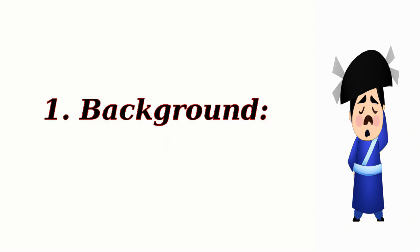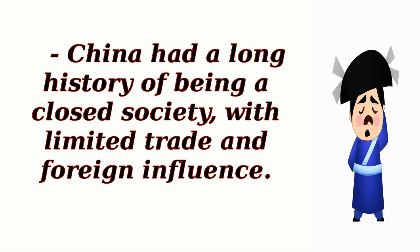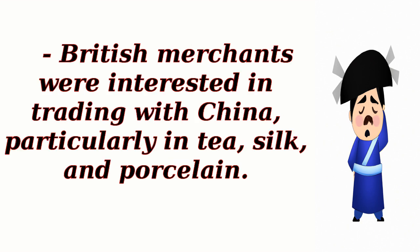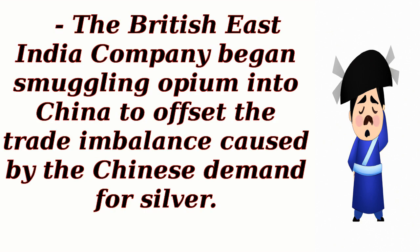Background: China had a long history of being a closed society, with limited trade and foreign influence. British merchants were interested in trading with China, particularly in tea, silk, and porcelain. The British East India Company began smuggling opium into China to offset the trade imbalance caused by the Chinese demand for silver.